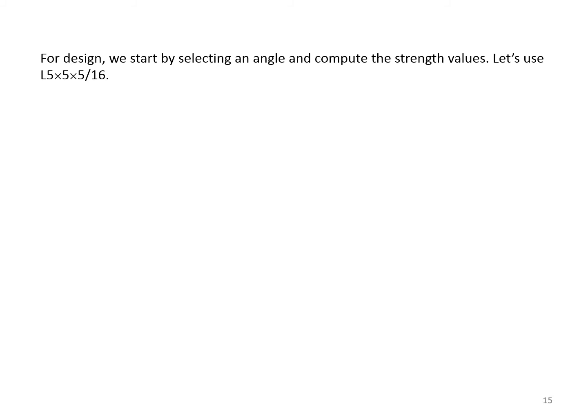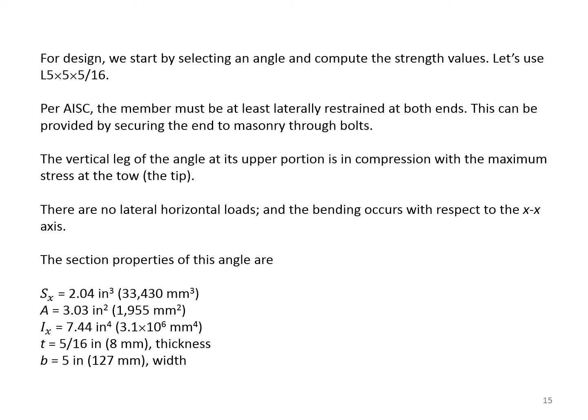Let's start the design by selecting an angle. Let's use an angle 5 by 5 by 5/16 of an inch in thickness. Per AISC, the member must be at least laterally restrained at both ends, and this can be provided by securing each end to masonry through bolts. The vertical leg of the angle at its upper portion is in compression with the maximum stress at the toe. There are no lateral horizontal loads and the bending occurs with respect to the X-X axis. The section properties of this angle are: SX, which is section modulus, is 2.04 inches³. Cross sectional area is 3.03 square inches. Moment of inertia of the cross section, 7.44 inches⁴. The thickness of the angle, 5/16 of an inch. And B, which is the width of the angle, is 5 inches.